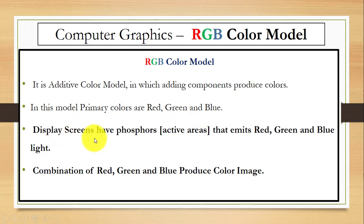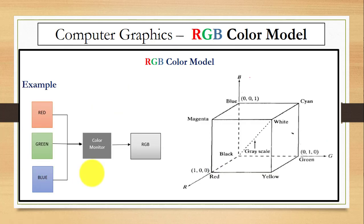And you can see we have display screens with active areas that emit red, green, and blue light. The combination of these colors produces the color image. You can see here when we combine red, green, blue color on the color monitor, we can produce this light. You can see the representation of this color model.